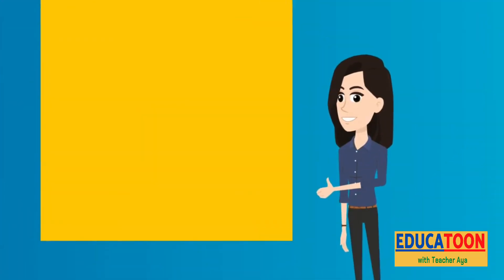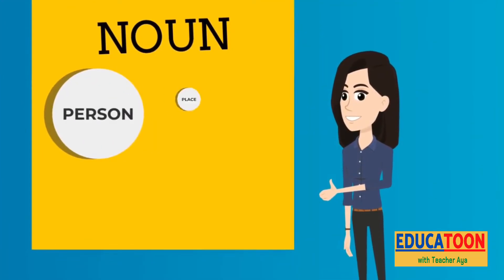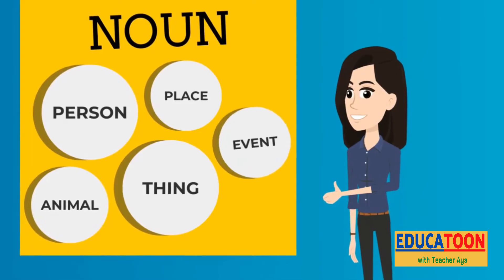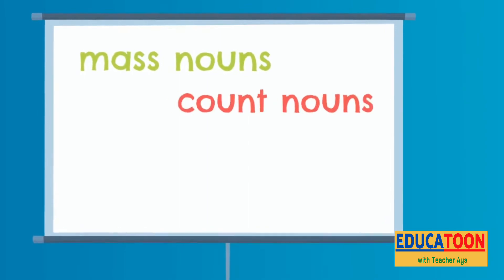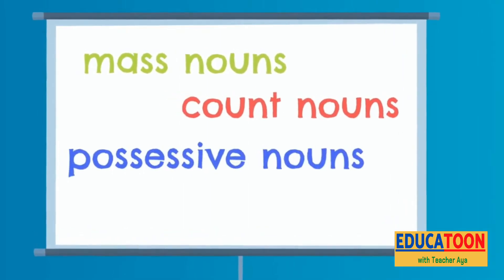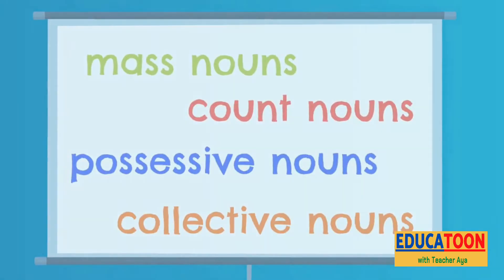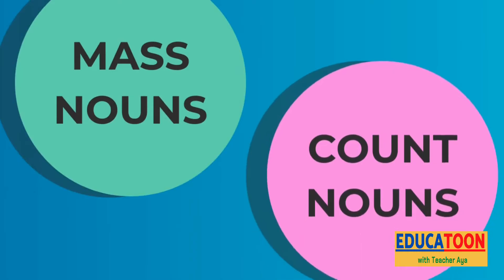That's right! A noun is a name of a person, place, thing, animal, or event. And nouns can be classified as mass nouns, count nouns, possessive nouns, and collective nouns. Let's begin with mass nouns and count nouns.